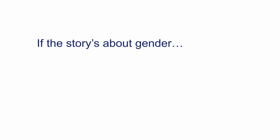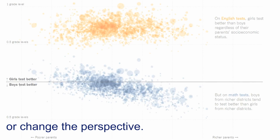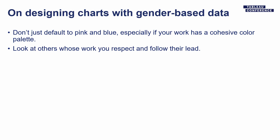It's something that could turn off your audience without even realizing it if you're just constantly using the pink thing. There are a bunch of other options. If your story is about gender, try a different palette, especially if you have a unified palette for your story already. You can also change the perspective of your story. In this example, the colors are actually about English and math tests, not about the genders — the genders are on the line. Don't reinforce the pink-blue thing. If you're going to do it, do it intentionally. Look at others' work you respect and follow their lead.